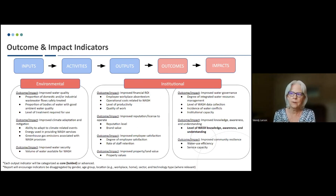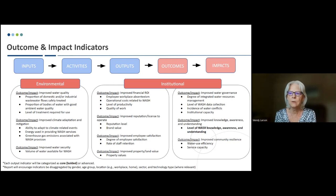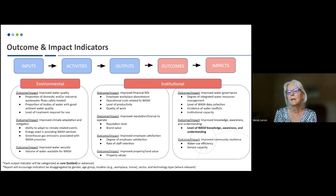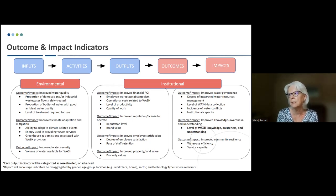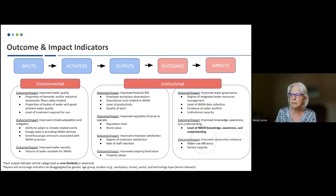We're also looking at environmental and institutional outcomes and impacts. Under environmental, improved water quality would be an example, along with improved climate adaptation and mitigation, and improved water security. Under institutional, for example, improved financial return on investment, improved reputation or license to operate for the company, and improved employee satisfaction. For impacts, we also include improved water governance, improved knowledge and awareness, and improved community resilience.